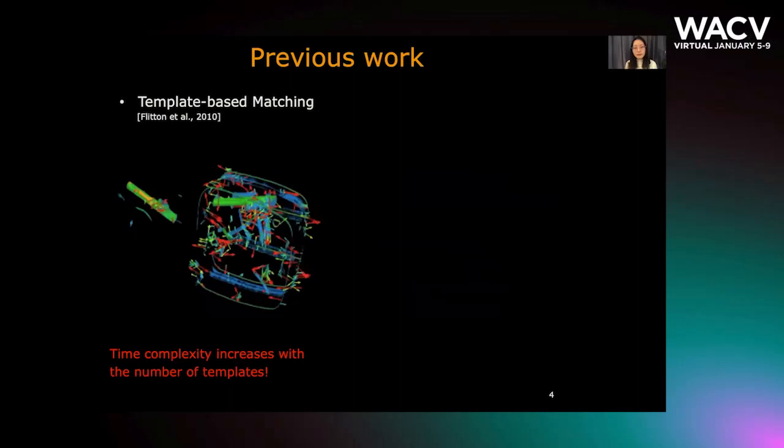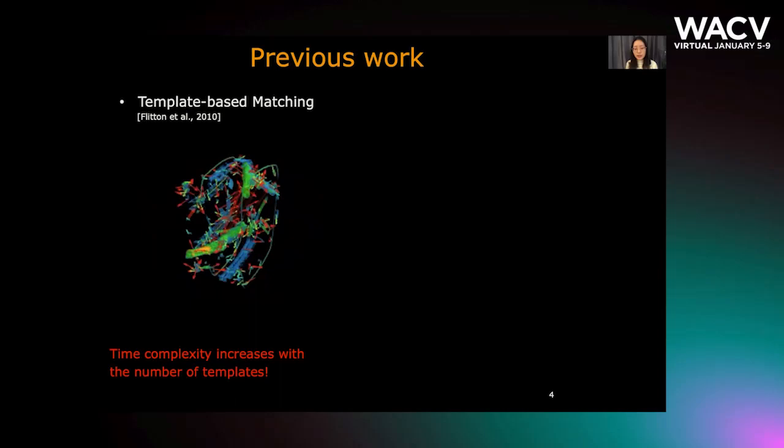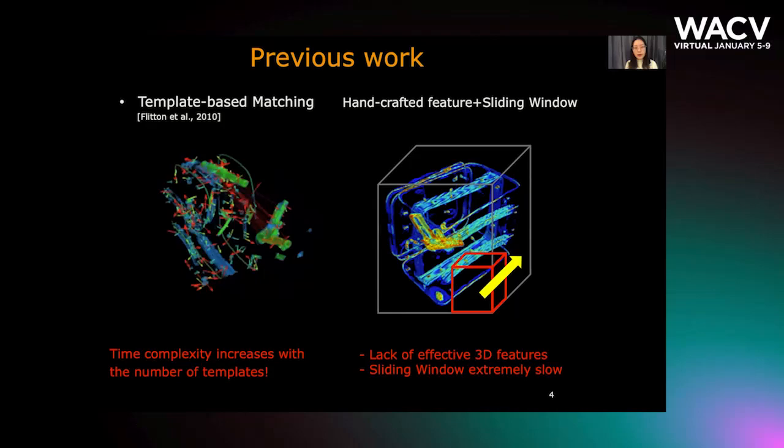Previous work on baggage CT detection is very limited. Earliest methods view weapon detection as a template matching problem. Time complexity increases drastically as the number of target templates increases. Another type of methods seeks to combine handcrafted features for classification and then run a sliding window to detect the locations of weapons. However, handcrafted features yield unsatisfactory results and sliding window is extremely slow.